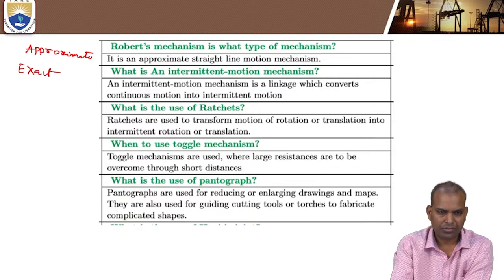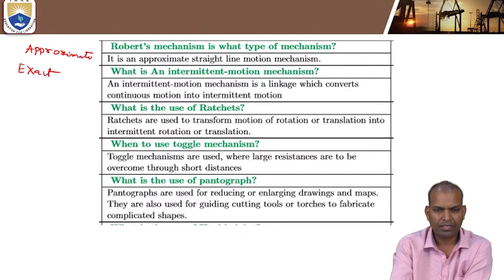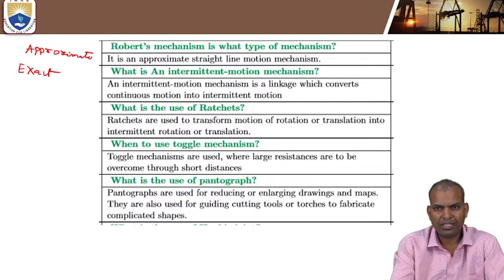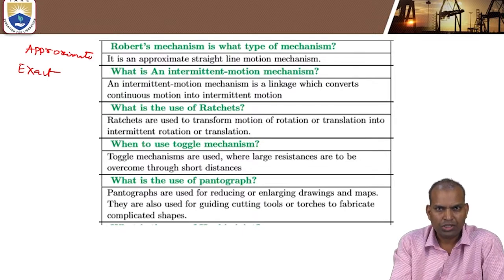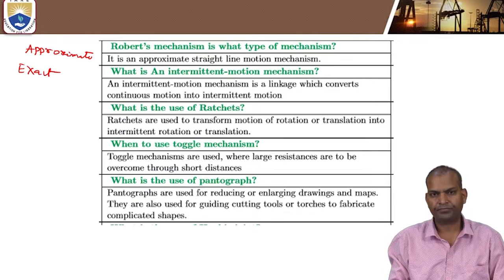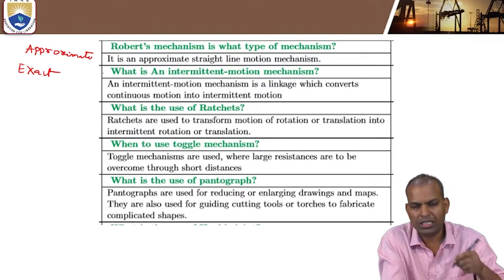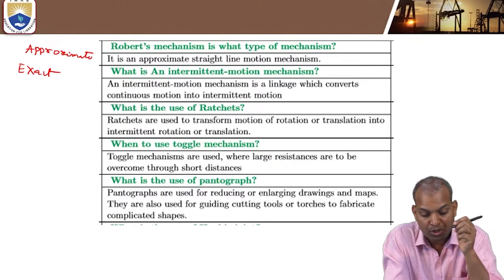There are various types of mechanisms: one is the Peaucellier mechanism, another is Roberts' mechanism, Hart's mechanism, and Chebyshev's mechanism. These are the various types that come under the category of straight line motion mechanisms. Roberts' mechanism comes under approximate straight line motion mechanism because the locus of the output point does not give an exact straight line — it gives an approximate straight line, which is why it is known as an approximate straight line motion mechanism.